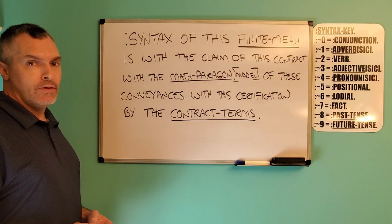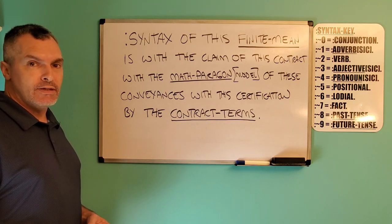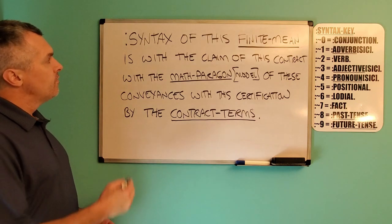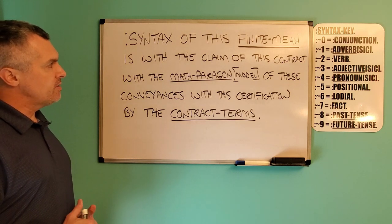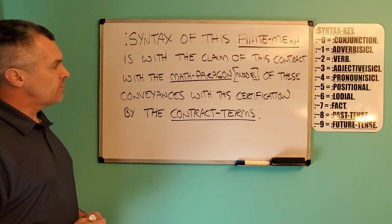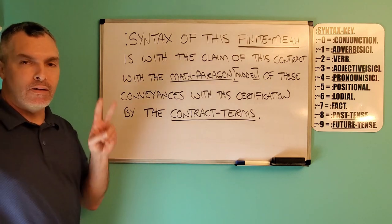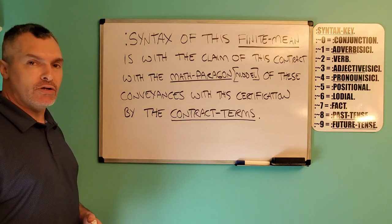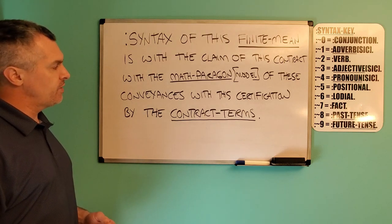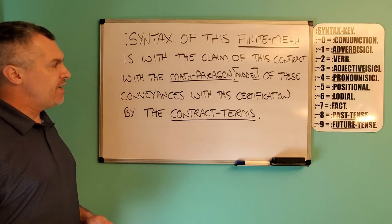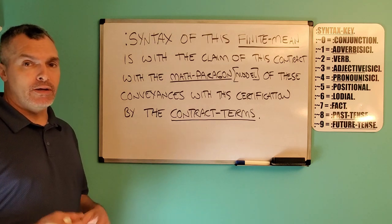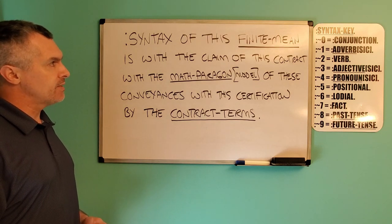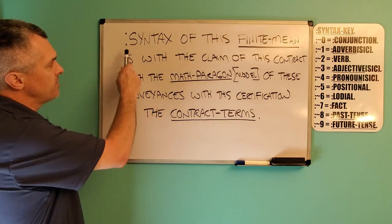Here is the finite mean of the word syntax as it exists in my codictionary, which governs my construct. The syntax of this finite mean is: with the claim of this contract, with the math paragon model of these conveyances, with this certification by the contract terms. So we have a cause, which is the syntax.